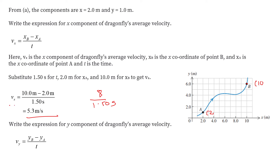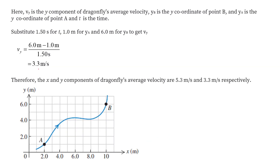Now let's find the y component of the dragonfly's average velocity. The y coordinate at point B is 6, while the y coordinate at point A is 1. So the value of delta y equals 5, and we divide it by delta t which is 1.5 seconds. From here, Vy comes out to be 3.3 meters per second. So the average velocity along the x direction is 5.3 m/s, and the average velocity along the y direction is 3.3 m/s.